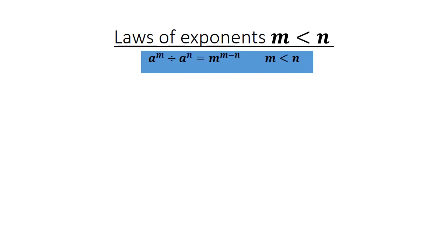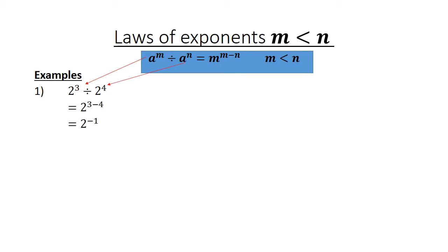Laws of exponents — now we have m less than n. 2 to the power of 3 divided by 2 to the power of 4 equals. The first exponent is less than the second one. 2 to the power of 3 minus 4 equals 2 to the power of negative 1, which equals 1 over 2. a to the power of 4 divided by a to the power of 8 equals a to the power of 4 minus 8, equals a to the power of negative 4, equals 1 over a to the power of 4.